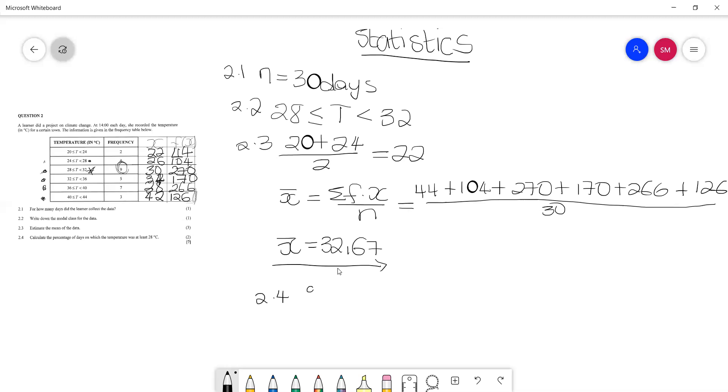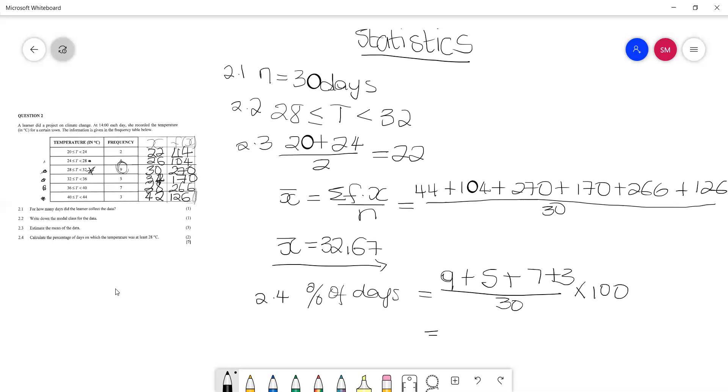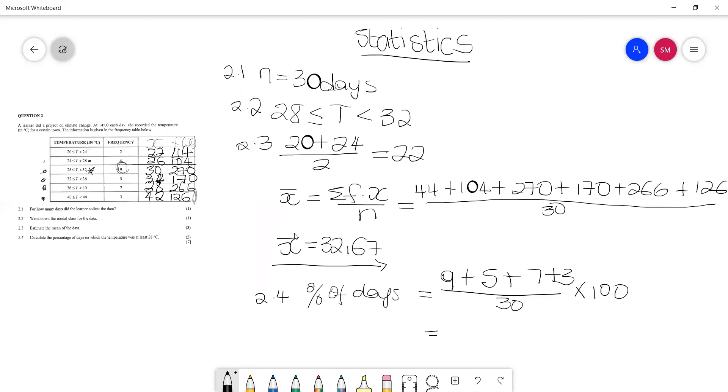that percentage of days is equal to 9 plus 5 plus 7 plus 3 all over 30 days times 100 because we are looking for percentage. Then we'll go to our calculator and we'll have 9 plus 5 plus 7 plus 3 all over 30, all of that multiplied by 100. So we get 80%. So 80% of the days, this temperature was above 28 degrees Celsius.